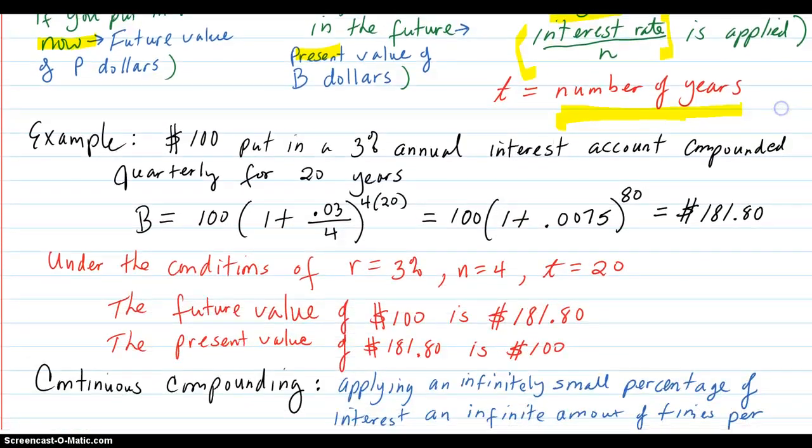So example. $100 is put in a 3% annual interest account, compounded quarterly four times per year for the next 20 years. How much money is it going to be in the future? So $100 is your present value, and B is going to be the future value coming out of that in 20 years.